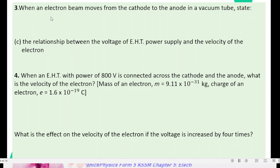Number 3A, when an electron beam moves from cathode to anode in a vacuum tube, state the type of motion of cathode ray tube, state the type of motion an electron beam, uniform acceleration.